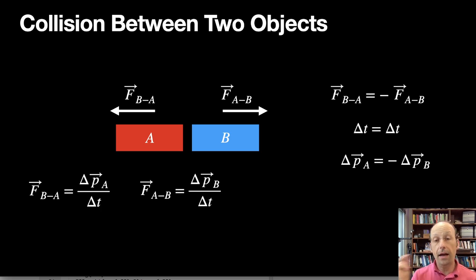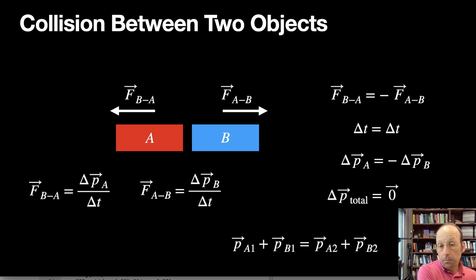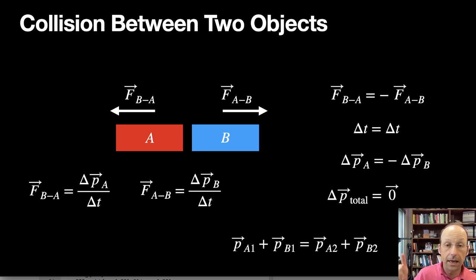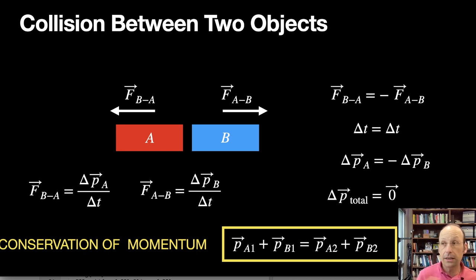If they have the same time interval, then their changes in momentum have to be equal and opposite. The change in momentum for A has to be the exact opposite of the change in momentum of B. You can write this as the change in total momentum being zero, or: PA1 plus PB1 equals PA2 plus PB2. The momentum before is equal to the momentum afterwards. We call this conservation of momentum, because momentum does not change over the interaction.